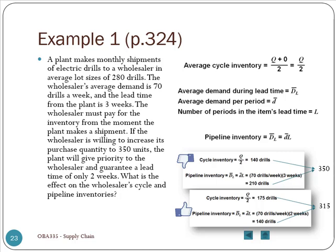But on the other hand, if they commit to purchase more every time, they will get a shorter lead time as a benefit. This time, the lead time will be two weeks, so the pipeline inventory is only 70 times 2, which is 140. Combine these two together—175 and 140—the new inventory level is 315.